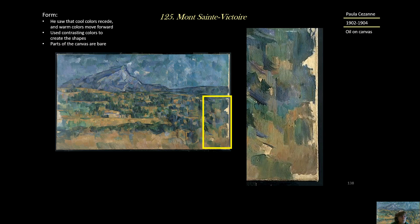Cézanne saw that cool colors go back and warm colors move forward. And in this piece he used contrasting colors — you can see that right here — next to one another to create his shapes. You can also see that parts of the canvas are bare. This is a blown-up piece from here, and you can just see how he's using alternating colors side by side to create his piece.